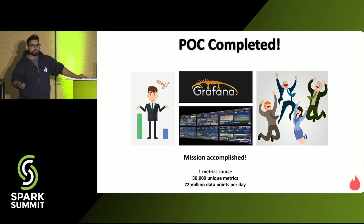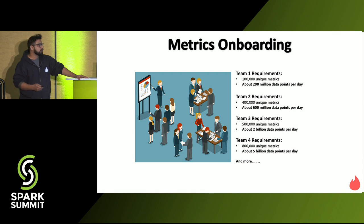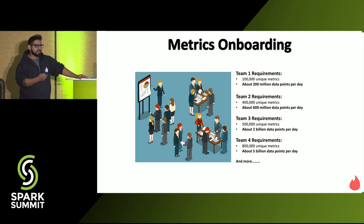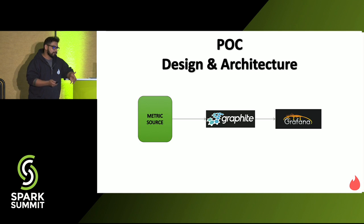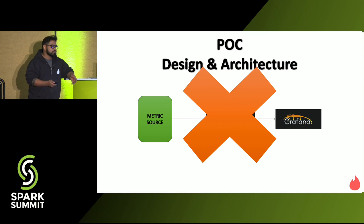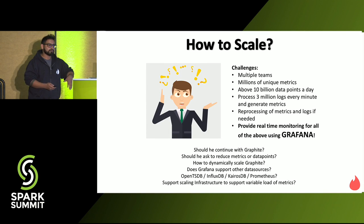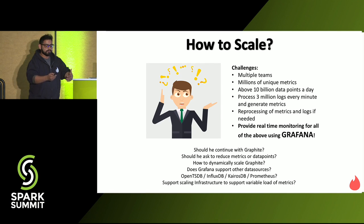But when he showed everyone in the company that he was able to provide a metric visualization and monitoring platform, all other teams also wanted to get their metrics monitored and added to the same platform so they could correlate all the metrics coming from different parts of the system and find issues together. His POC architecture wouldn't scale for these requirements. Now there was a problem — how to scale? Whether he should scale Grafana, whether he should scale Graphite — his POC only consisted of those two things.